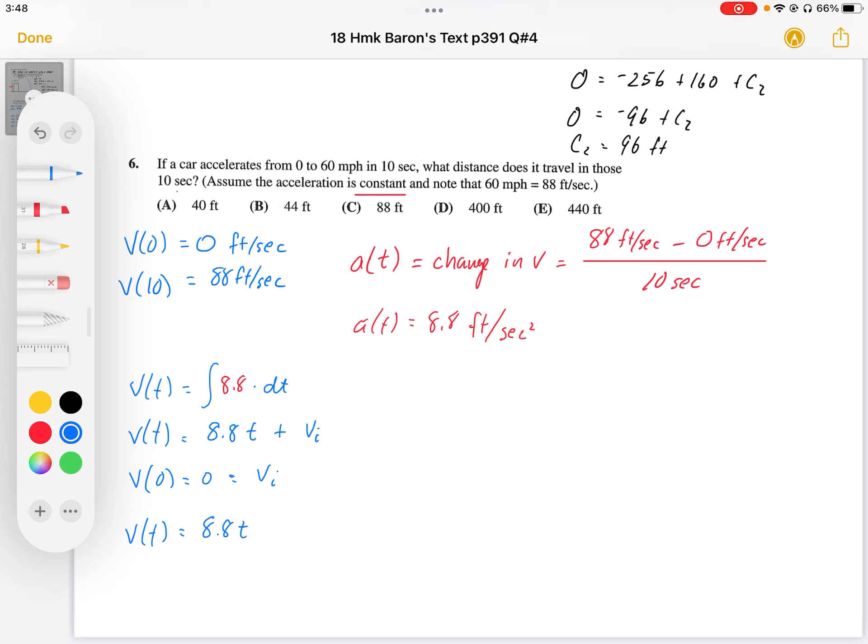Now, if I want to find the distance, I'm going to assume that because my velocity is all positive, my distance is going to be the same as my displacement. So my change in d is equal to the area under the curve from 0 to 10 seconds of my v of t graph.